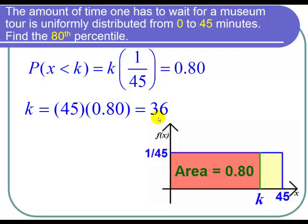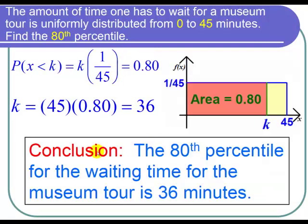So now I'm ready to state my conclusion. I can conclude that the 80th percentile for the waiting time for the museum tour is 36 minutes, and I'm done with the problem.